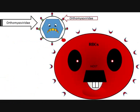Envelope viruses, such as Orthomyxoviridae, have protein spikes — namely hemagglutinin and neuraminidase. Hemagglutinin binds specifically to red blood cells, causing infection.